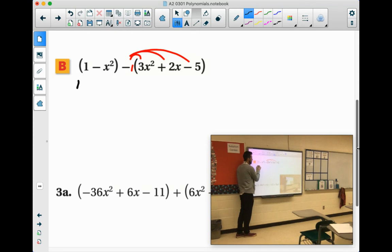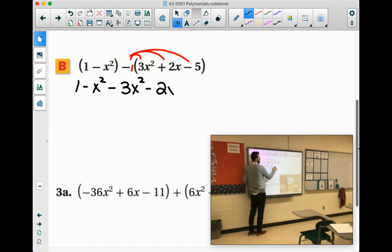So the first parentheses, 1 minus x squared, nothing changes. But everything in the parentheses after that minus will become the opposite. So it will be negative 3x squared, negative 2x, and positive 5. Because remember, you are doing minus negative 5, which changes to plus 5.